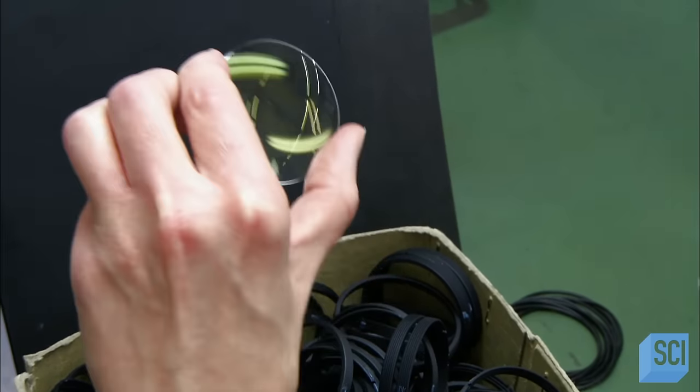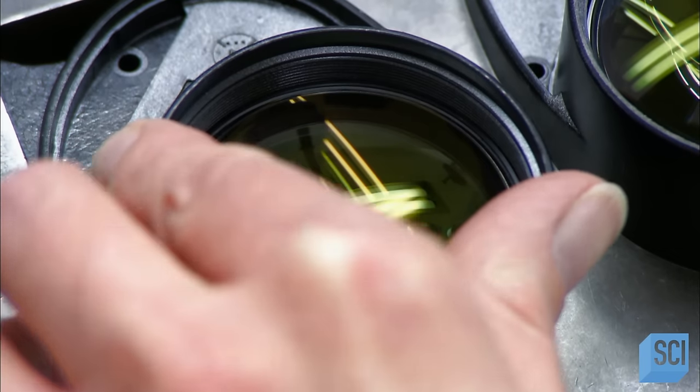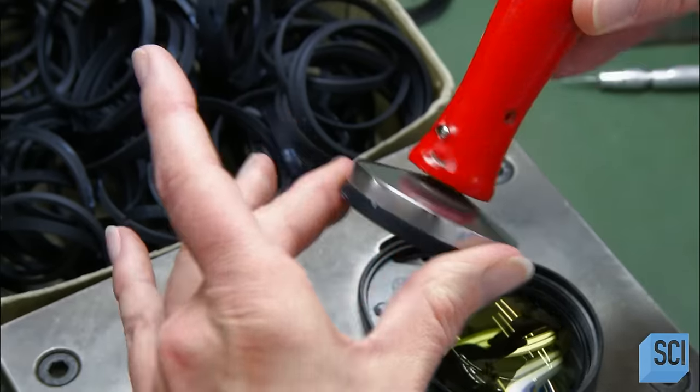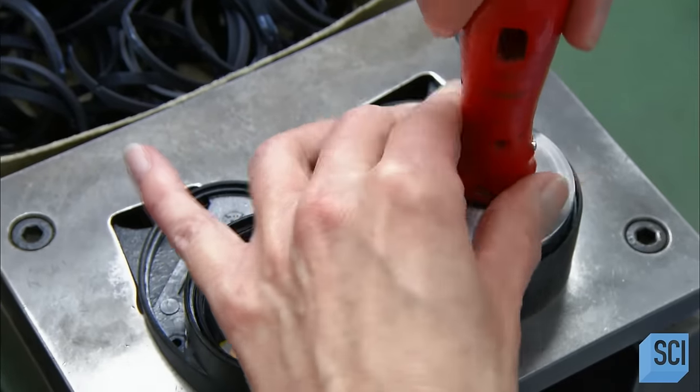Workers clean the lenses with a few blasts of compressed nitrogen. Then secure them in place with threaded holding rings.